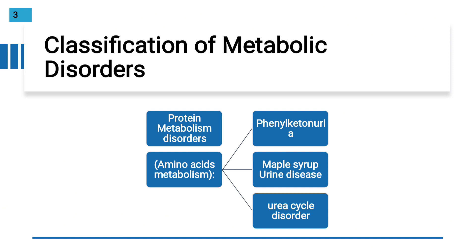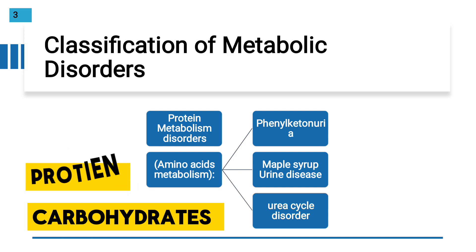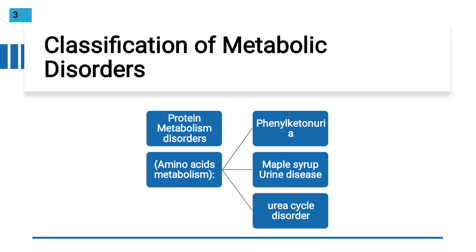Protein metabolism disorders include phenylketonuria, maple syrup urine disease, and urea cycle disorders. As you know, there are three main macronutrients in our body: carbohydrates, proteins, and lipids. When we take food, protein is broken down into amino acids, then into urea, and excreted from the body.